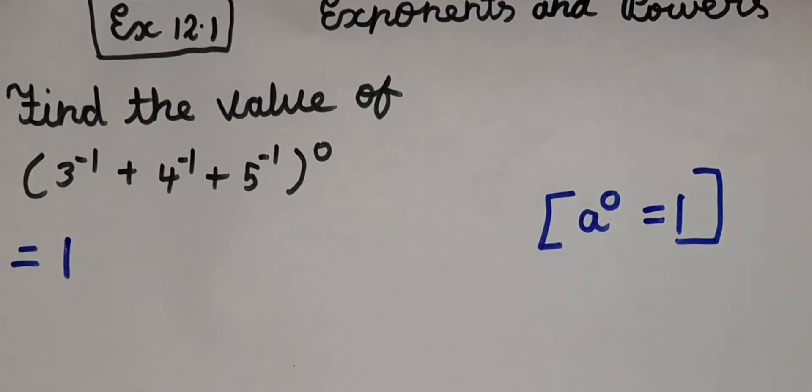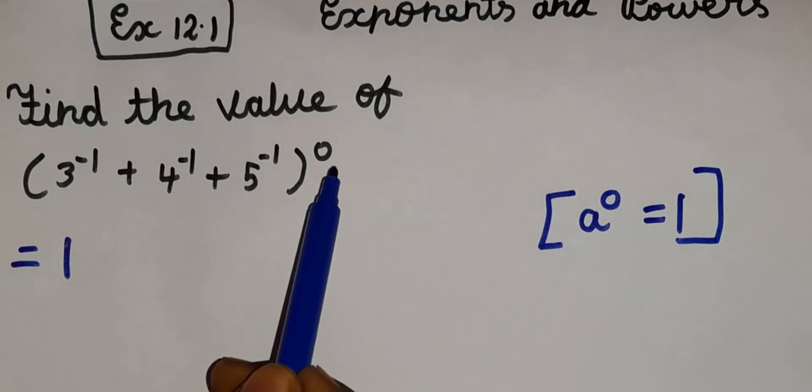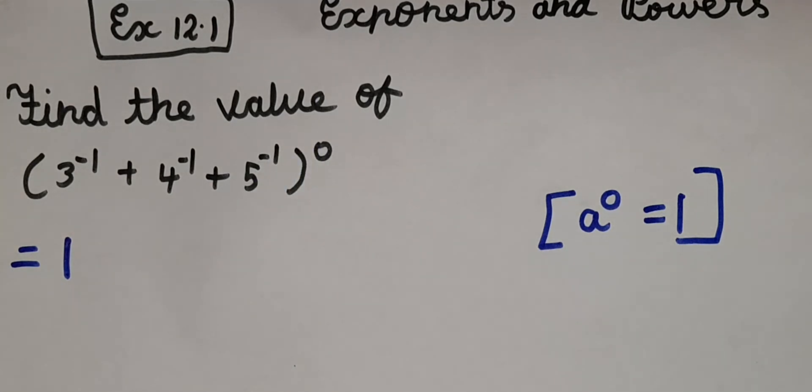According to this rule, if we have the whole power 0 or power as 0, we should write it as 1. Our answer is 1. Here we had the power 0, that's why we wrote 1.